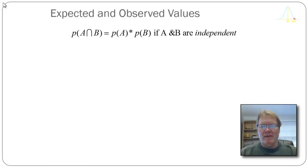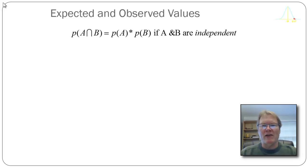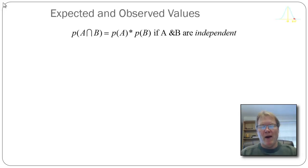Here's another way to understand the chi-square statistic and expected values. If you've had probability in any of your classes, you'll remember that when we look at the joint probability — the probability of an intersection of two events — we figure out that probability by multiplying the individual probabilities together. The probability of A intersect B equals the probability of A times the probability of B. The critical assumption is that A and B are independent of each other — which is exactly what the null hypothesis tells us.